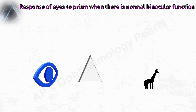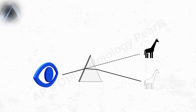Now let's see what happens when prisms are placed in front of the eyes of an observer with normal binocular cooperation. Since light rays entering a prism are deviated towards the base, the image is seen displaced towards the apex of the prism, and the eye examined also tends to deviate towards the apex.